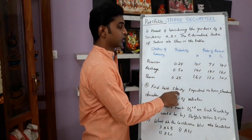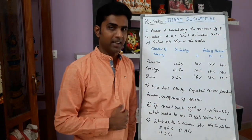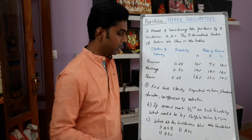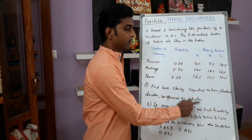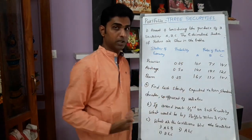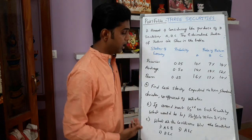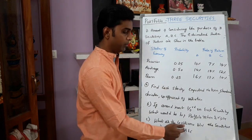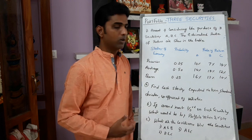We need to find each stock's expected return, that is R bar — R1 bar, expected return — and standard deviations to calculate. Also, coefficient of variation. The second question is: if Anand invests one-third in each security — 0.333 — on each security A, B, C — what is your portfolio return, what is your risk, and what are the covariances between the securities A&B, B&C, and A&C?